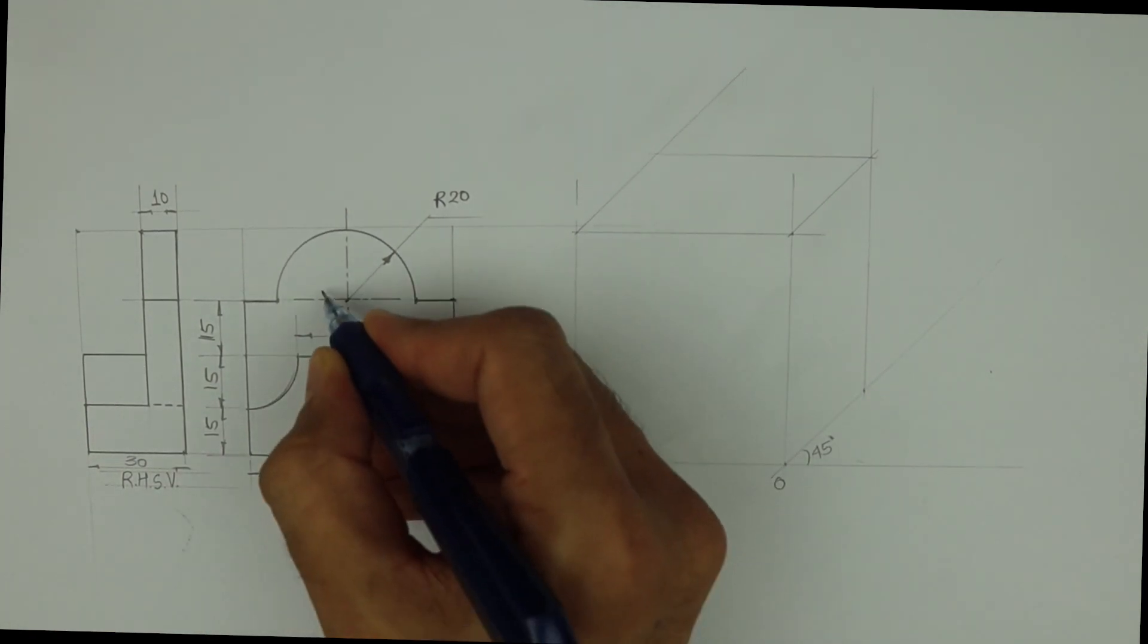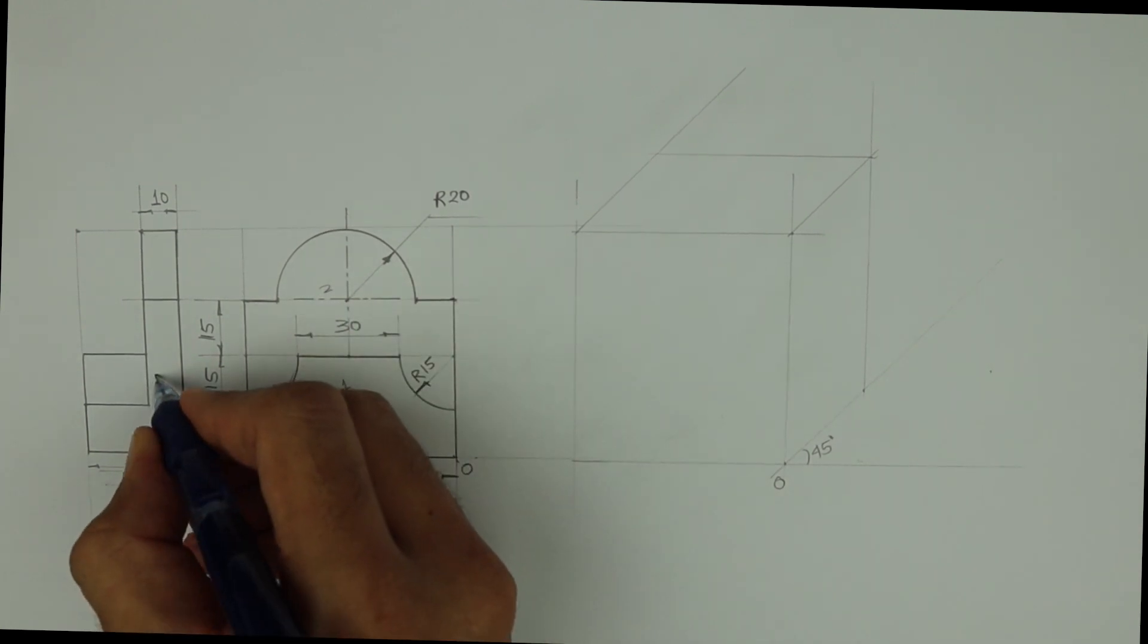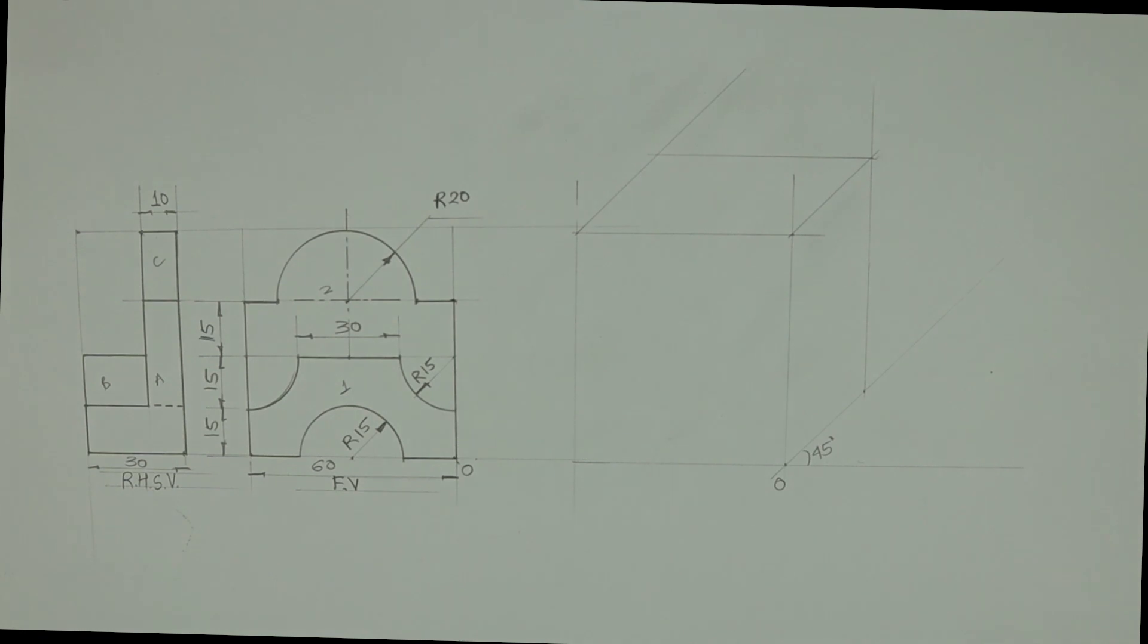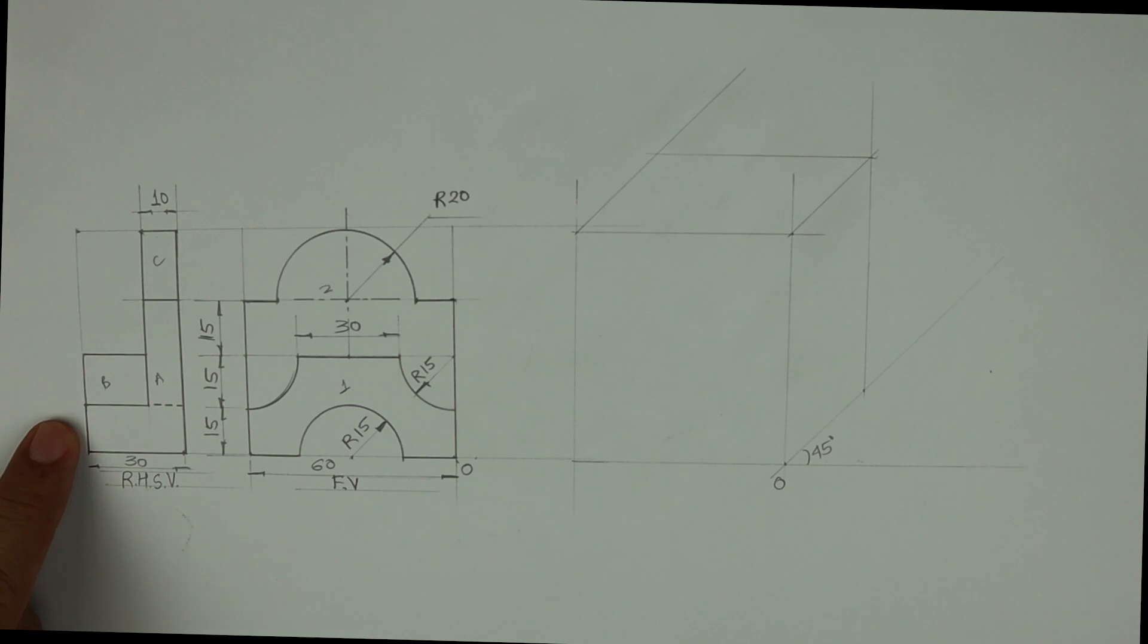Now this is part 1, this is part 2. This is A, B and C. So we will start with part 1. See this part 1 is here, nearer to you. Right. So we will draw this part.